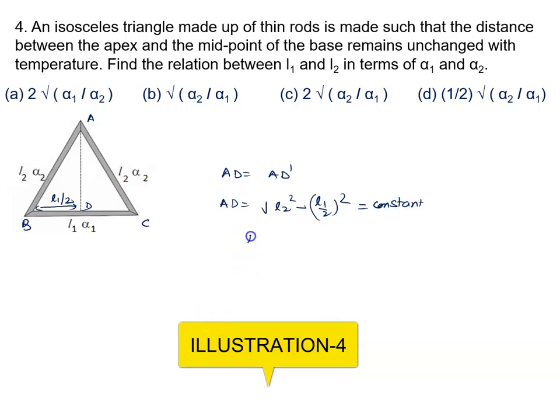So we open the bracket. We will write L2 square minus L1 square upon 4 is constant.